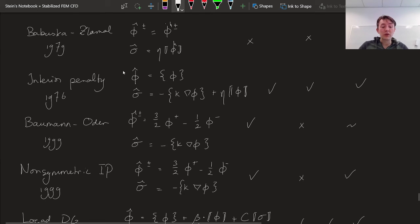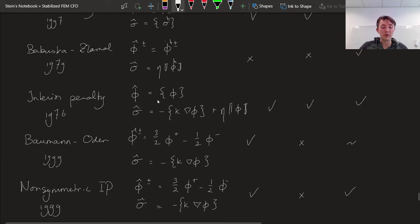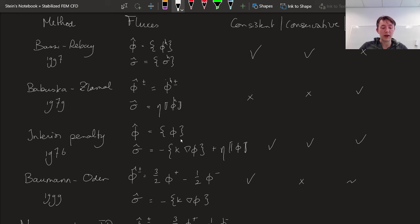A method that is also very old but still used very frequently is the interior penalty method, where we have the same numerical flux as the Basle-Hibert method for phi, the average of our phi finite element solution. But for our choice of numerical flux for sigma, we combine the Babushka-Zlamal method, that's pretty much this term, with something that makes this consistent, that is this guy. For the true solution, we have the relation between sigma and phi as minus kappa times the gradient, so sigma is equal to minus kappa times the gradient of phi. So that's precisely what this is.